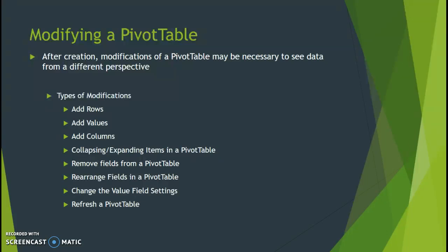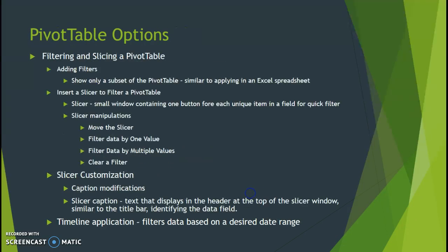We'll also look at pivot table modifications. Once you get your pivot table created you may need to see your data from a different perspective — slice and dice the data a bit. So you can add rows, values, and columns. You can expand and collapse items in the pivot table, and you can remove, rearrange, or change your field value settings, as well as refreshing the pivot table in the event that your original data set requires modification.